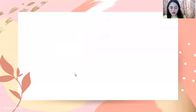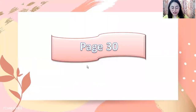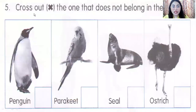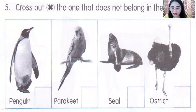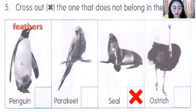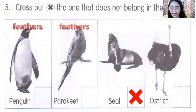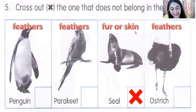Okay, let's move on to page 30, the last page. Cross out the one that does not belong in the group. We have penguin, parakeet, seal, and ostrich. The animal that does not belong is seal, because penguin, parakeet, and ostrich have feathers, while seal has fur or skin.